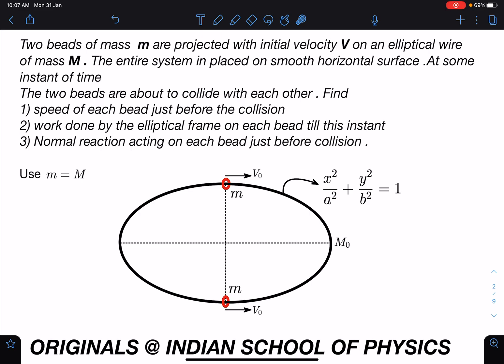At some instant of time, the two beads are about to collide with each other. We have to find the speed of each bead just before the collision, work done by the frame on each bead till this instant, and normal reaction acting on each bead just before the collision. The third part is very, very important and not many people can think of this part. The first one is a very standard problem.